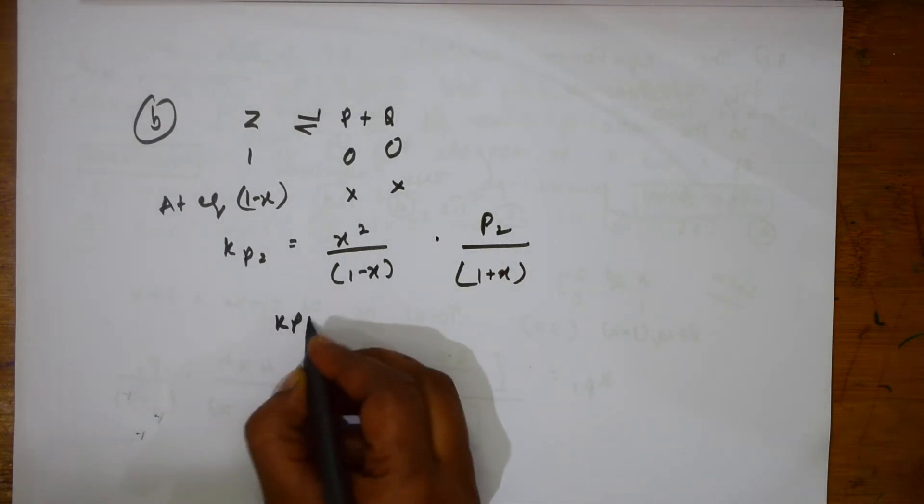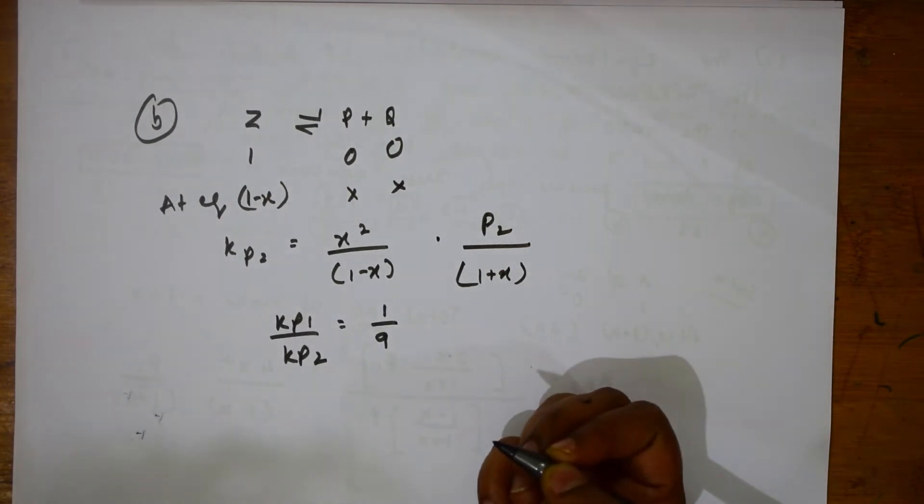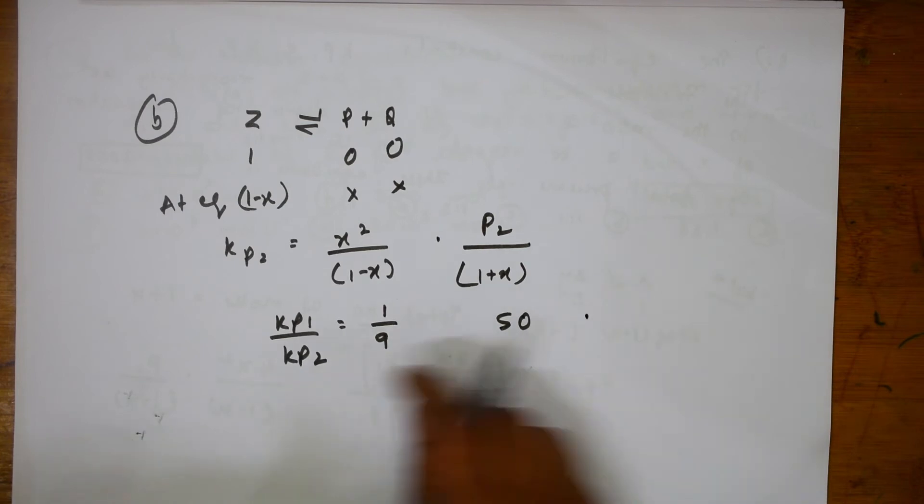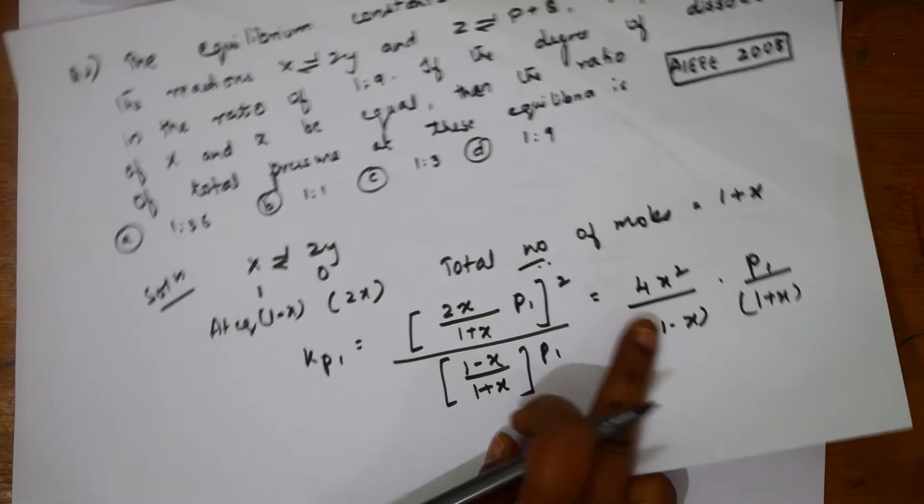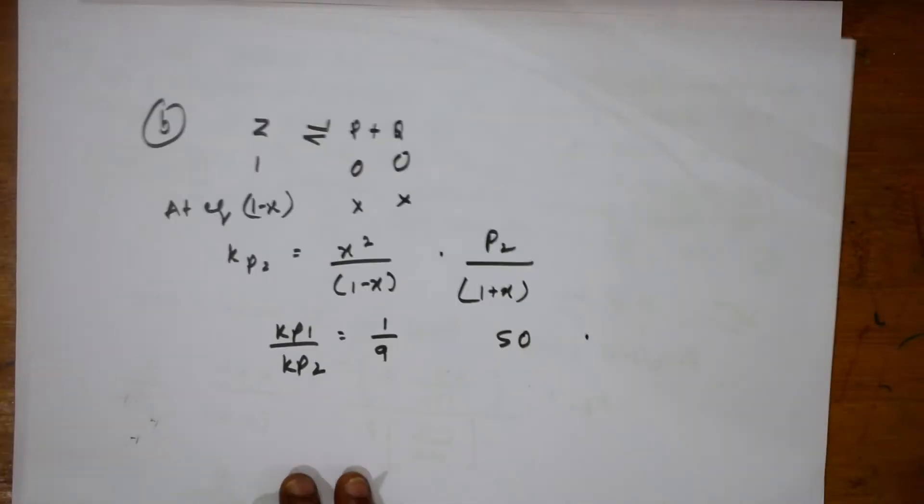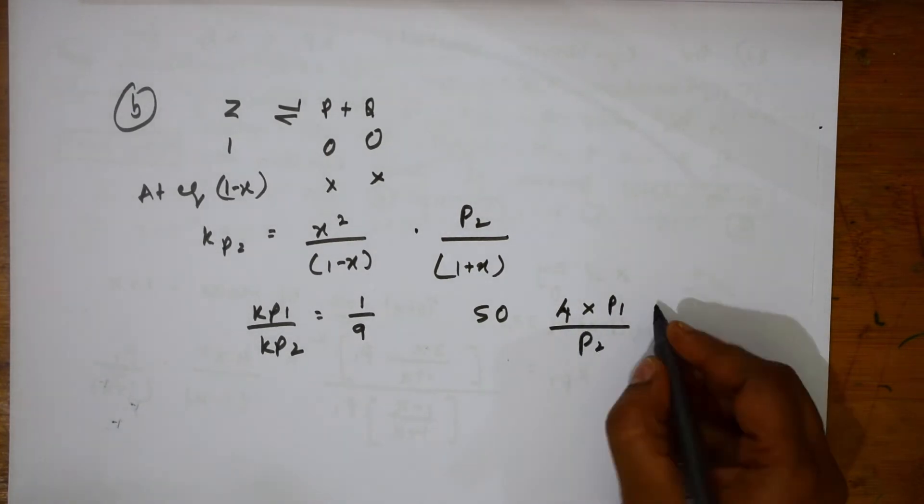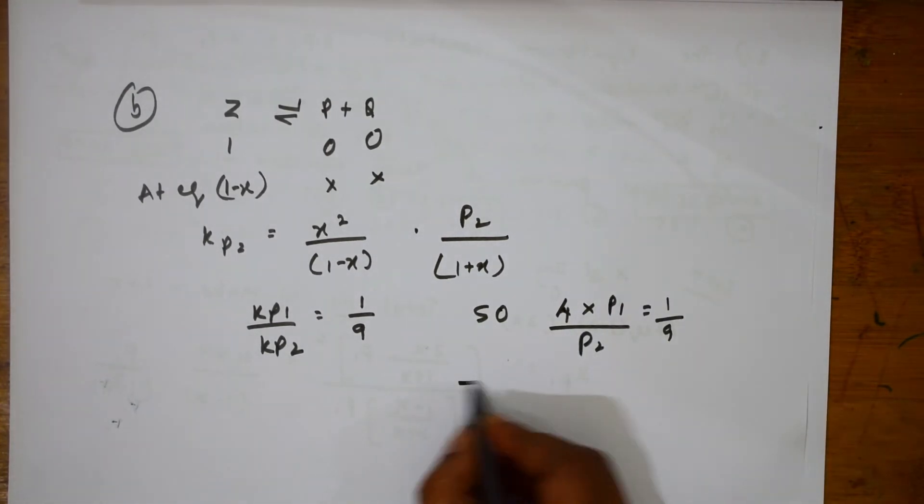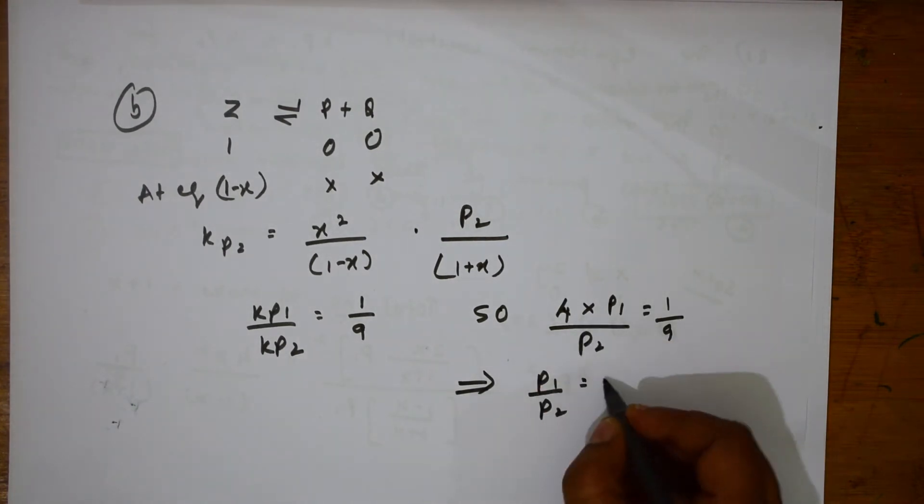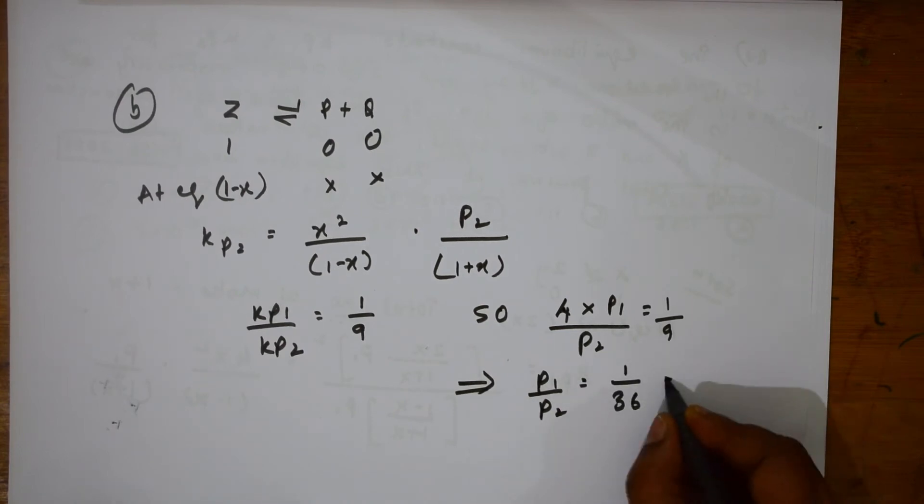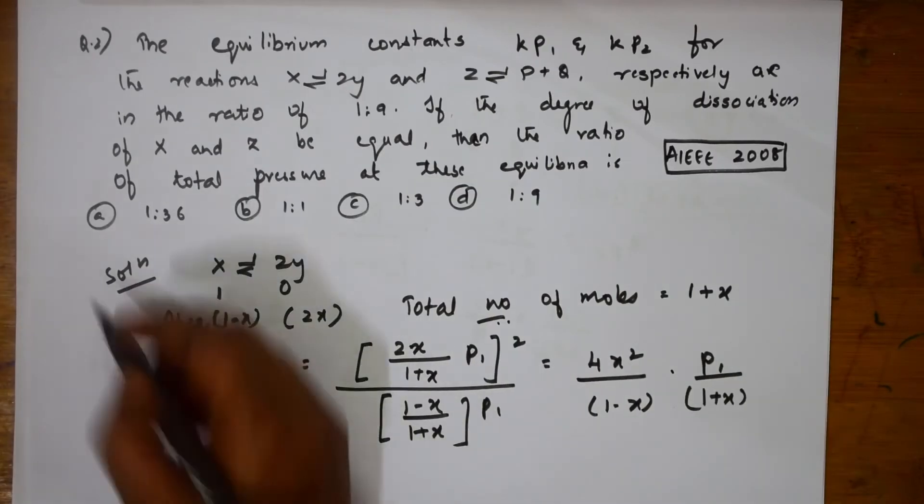Then, I am taking ratio of Kp1 by Kp2 which is equal to 1 by 9. If I take the previous one, because they have given 4, here this one 4. So now I am taking that 4 into P1 by P2 is equal to 1 by 9. This becomes equal to P1 by P2 is equal to 1 by 36. So it is 1 is to 36. The correct option for this is 1 is to 36.